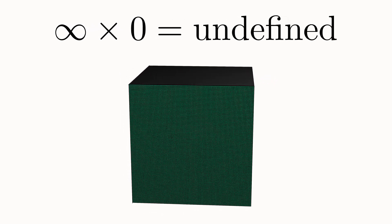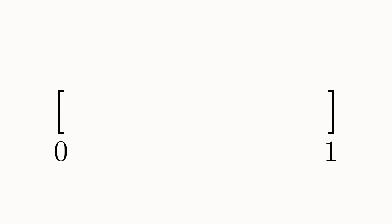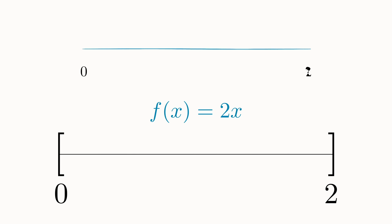Perhaps this problem disappears when we go down to one dimension. Consider the interval of length one. You can use this simple equation to map every single point on this interval to a point on the interval that has a length of two. Now a different problem arises: two line segments of different lengths can still have the same number of points. You can disassemble the unit interval into an uncountable number of points and rearrange them to form an interval twice as long.